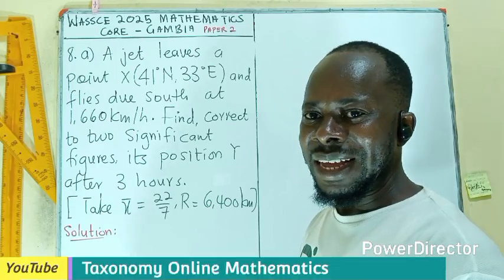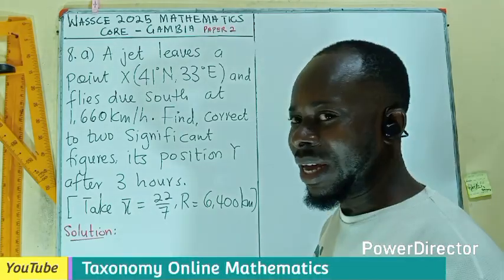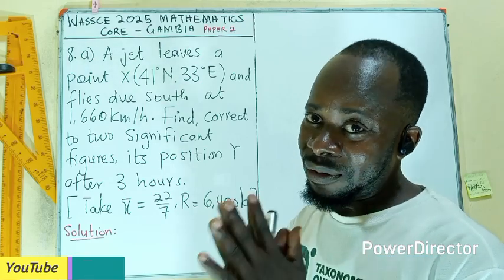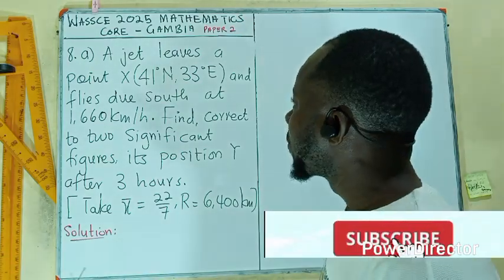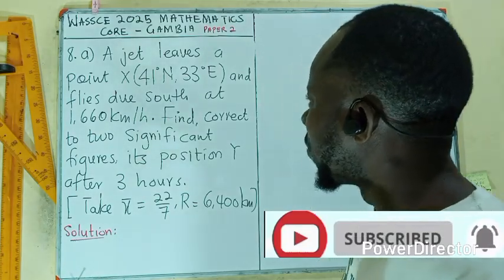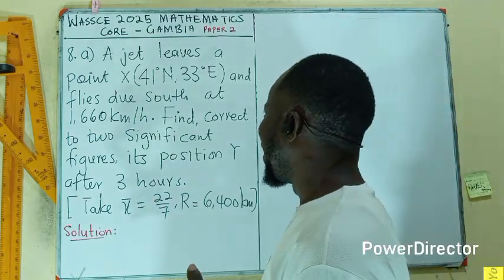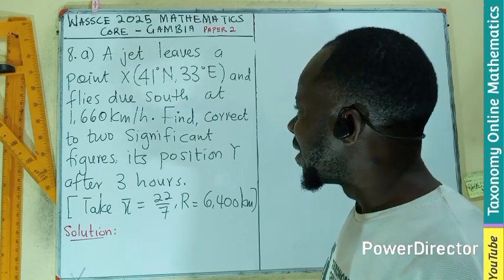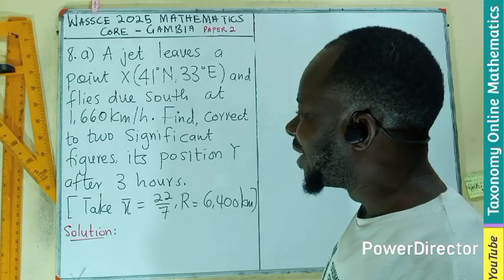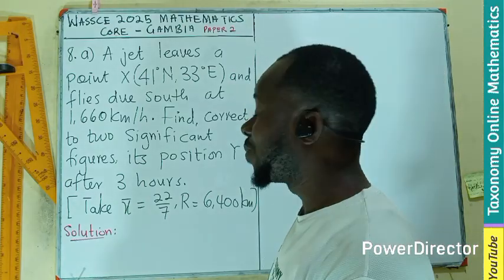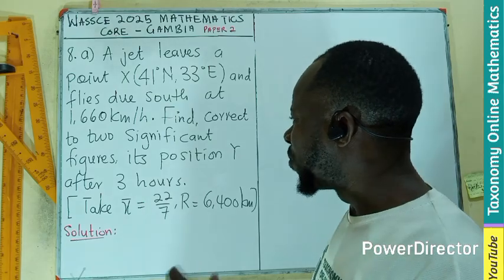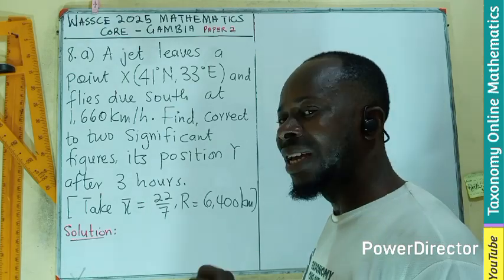Hello, welcome to question number 8A, still on the Gambier's General Mathematics 2025 section B question paper. So a jet leaves a point X on 41 degrees north and 33 degrees east and flies due south at 1,660 kilometers per hour. We have to find, correct to two significant figures, the position Y after three hours.